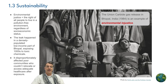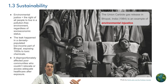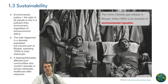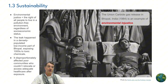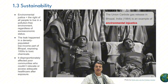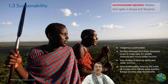The 1984 Union Carbide gas release in Bhopal, India, occurred in densely populated, low-income areas. Thousands of people — disproportionately from underrepresented and poor communities — were exposed to toxic chemicals. These communities were unable to relocate, access adequate healthcare, or effectively fight for their rights or for compensation from Union Carbide afterward, which is why it is a prime example of environmental injustice.